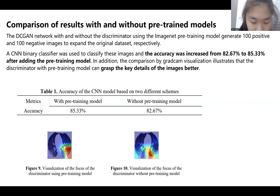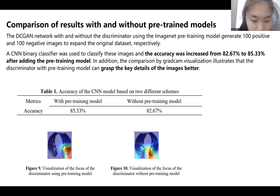The accuracy of the model with the pre-training model shown in Table 1 was found to be 85.33%, while the accuracy of the model without the pre-training model was 82.67%, an increase of 2.66%. The improvement in classifier accuracy showed that images generated by the DC-GAN model whose discriminator uses the ImageNet pre-training model are more realistic.